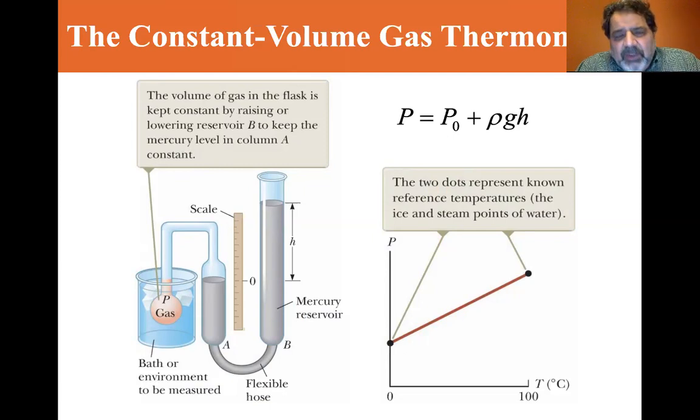Well, you get pressure by the P0 being the atmospheric pressure, and then you can get rho GH. So if you just measure H, you take rho, which is the density of the material you have, G, which is the gravitational constant, 9.8 meters per second squared, and H is the height. So as long as you can measure the height, and you know that initial atmospheric pressure P0, then you can calculate P.